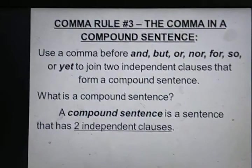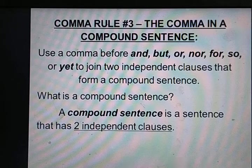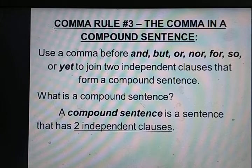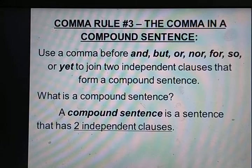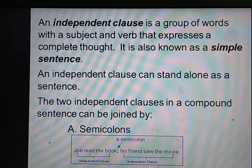Clauses वाली video देखने से आपको बिल्कुल clear हो जाएगा। दो independent clauses वो होते हैं जिनका अपना subject और अपना predicate होता है — joined by the coordinating conjunction। अगर इन्हें अलग-अलग करके लिखा जाए तो तब भी पूरे meaning देते हैं — इसीलिए इन्हें independent clauses कहते हैं।